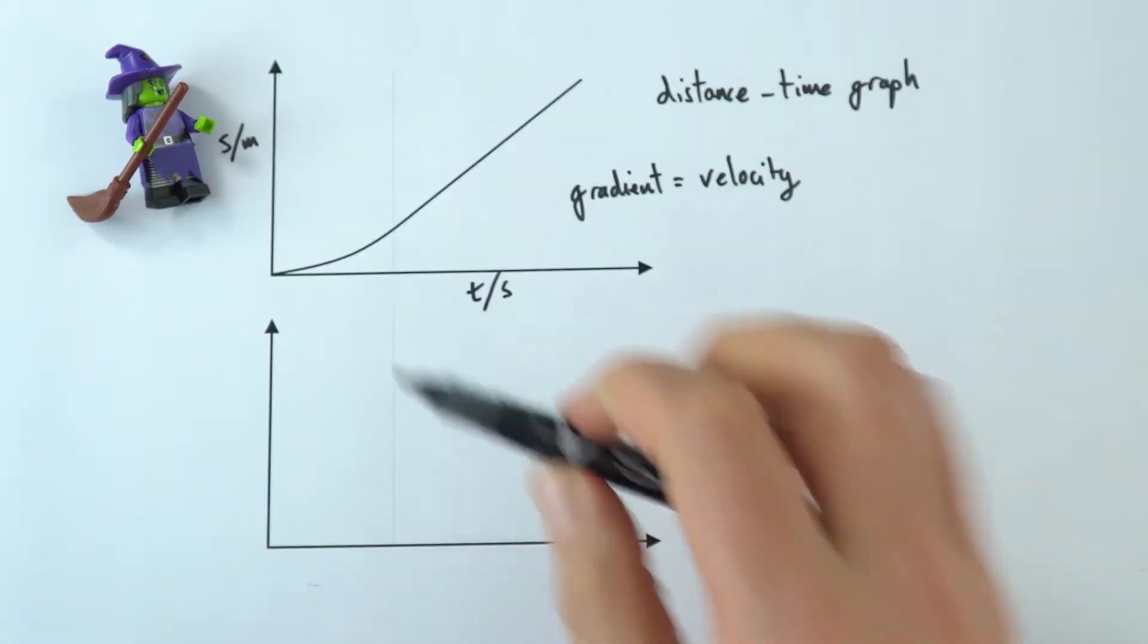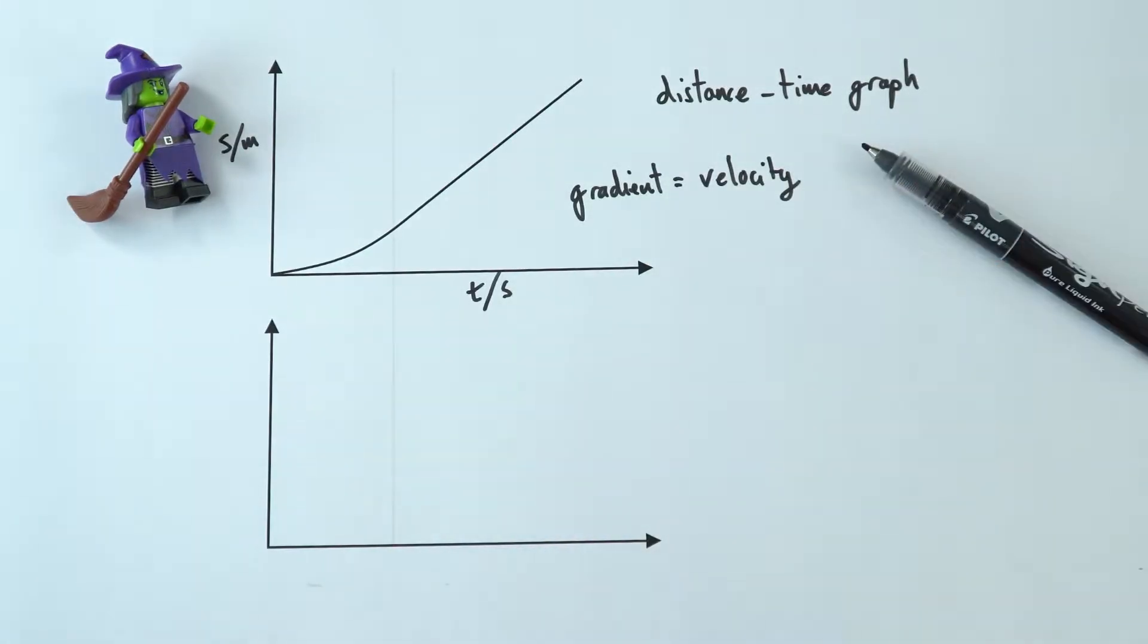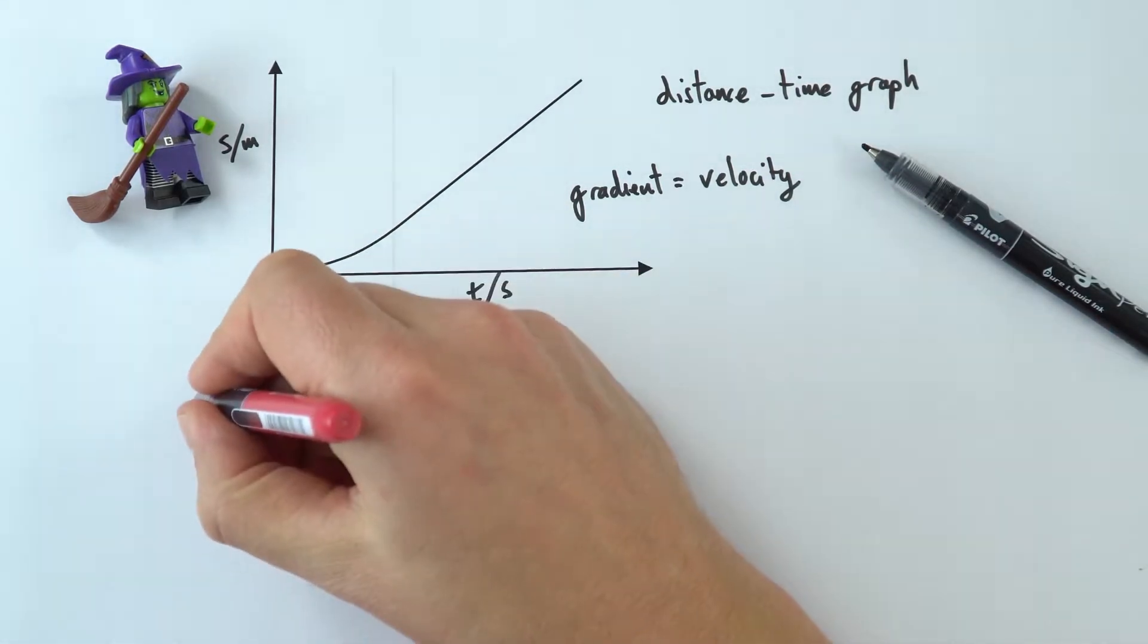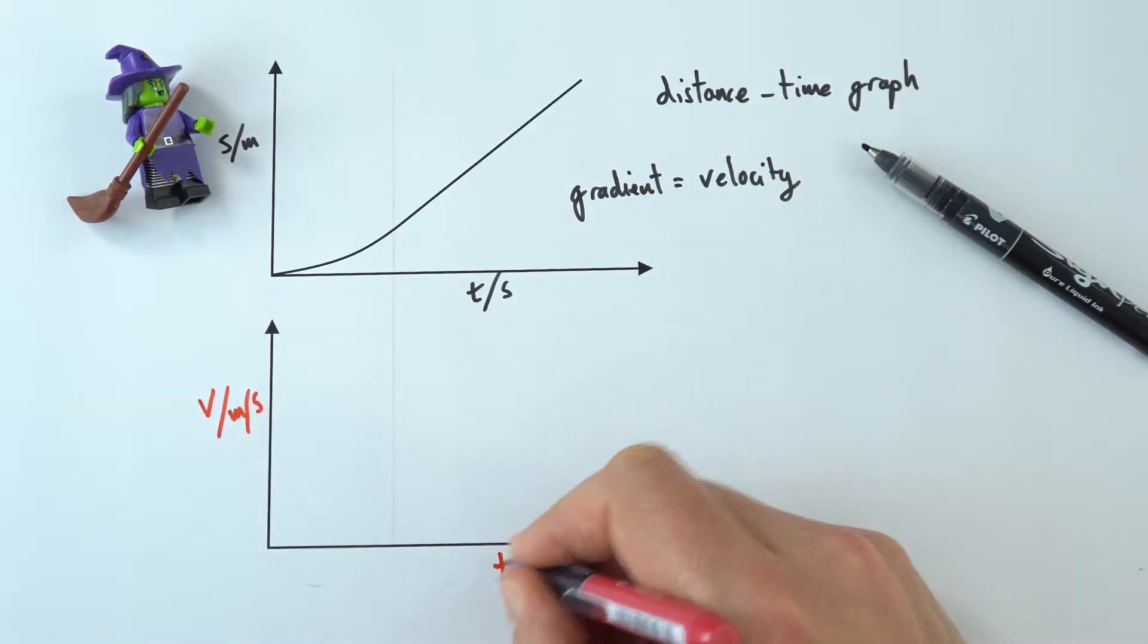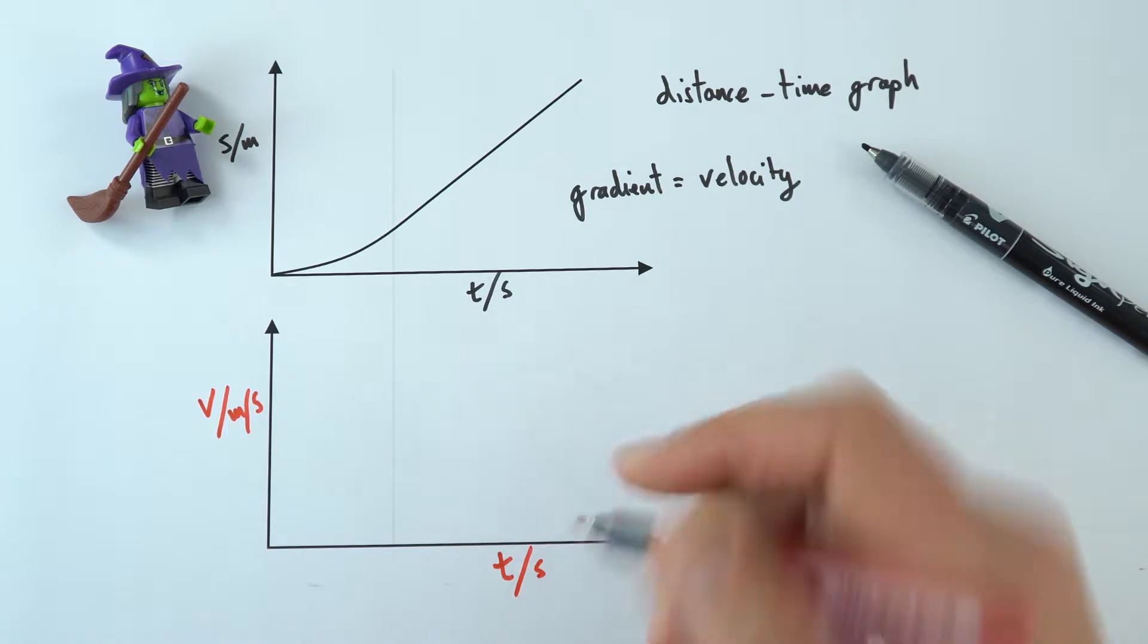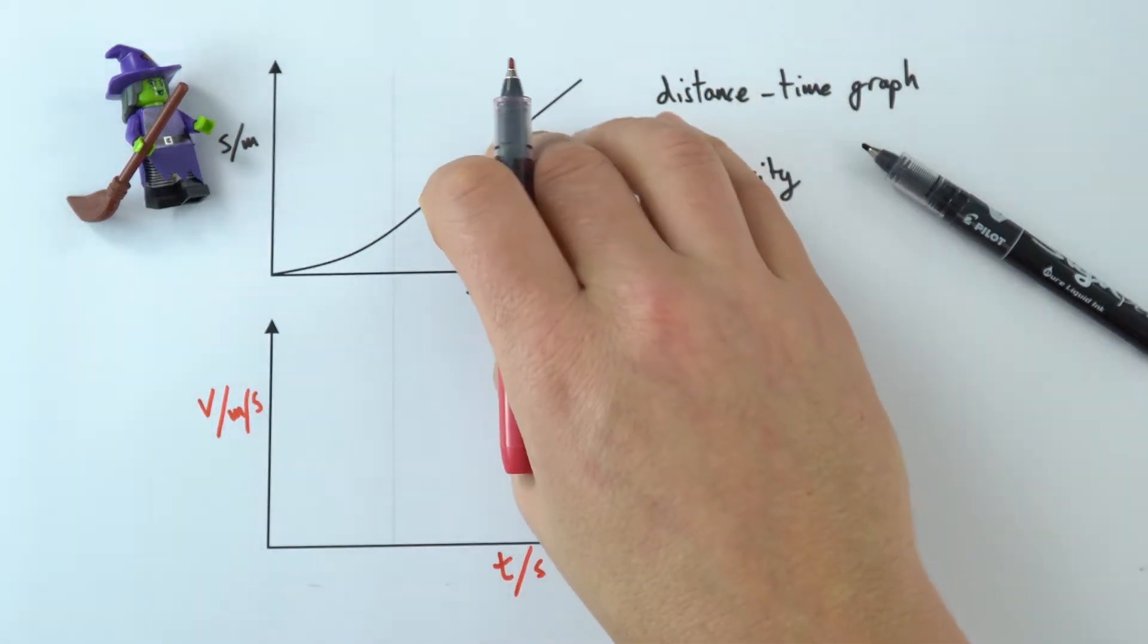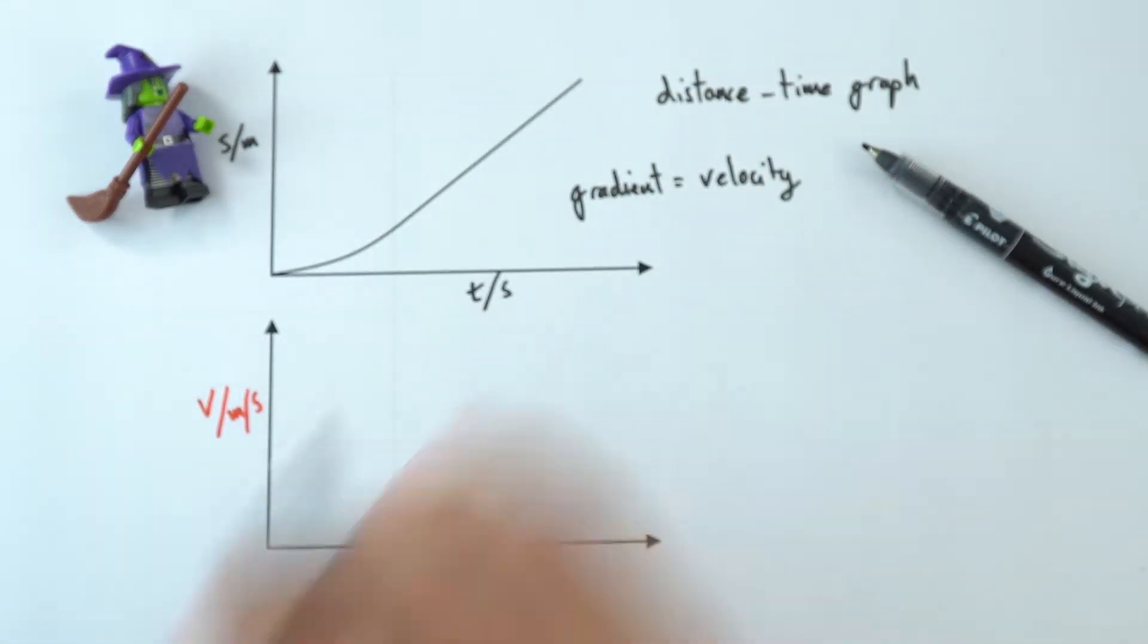So that's really useful for many scenarios. But sometimes we want to look at something different, even though it might be about the same object. And here we can actually look at how the velocity, which is measured in meters per second, how that varies over time measured in seconds. So what we can do is plot the same data, but rather than looking at distance, we're going to be looking at velocity.